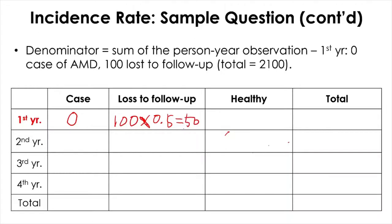And then healthy people—you have to take away 100 because you have 100 lost to follow-up, so that's 2,000. They all contributed a year without the disease. So the total will become, you just add all these together, it will become 2,050 for the first year. So the total person-year observation for the first year is 2,050 person-years.